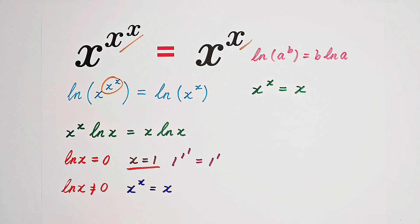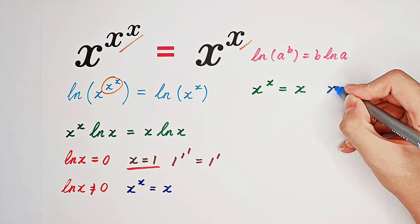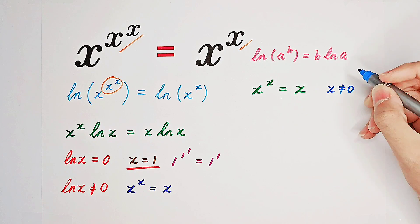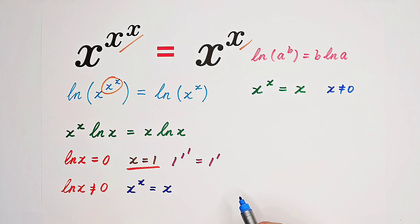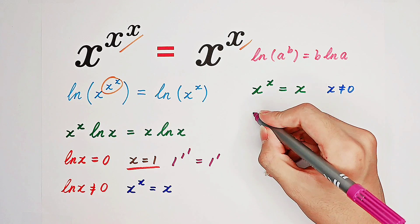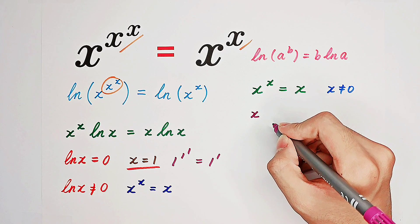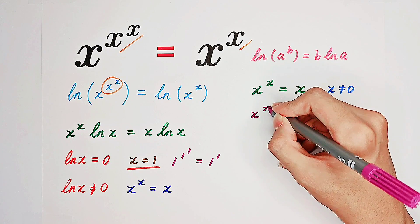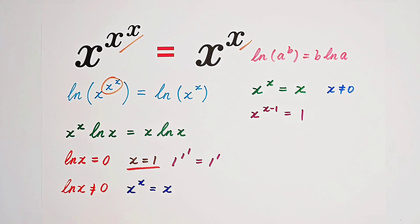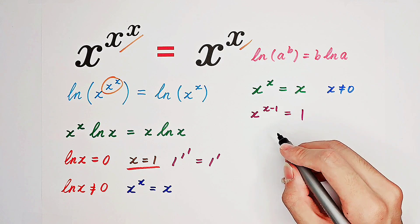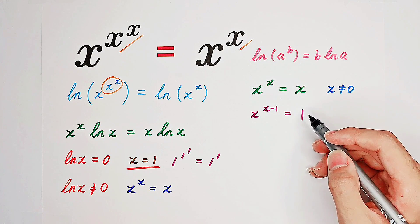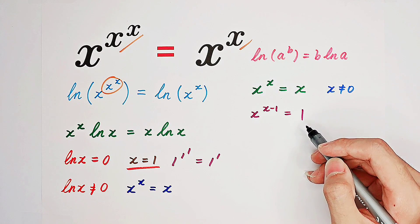Since x cannot be zero — because then our right-hand side would be zero to the power of zero, which doesn't make sense — if x is not equal to zero, we can divide both sides by x, and the right-hand side will be one. So dividing both sides by x gives x to the power of x minus one equals one. The left-hand side has an exponential form and the right-hand side is just one.